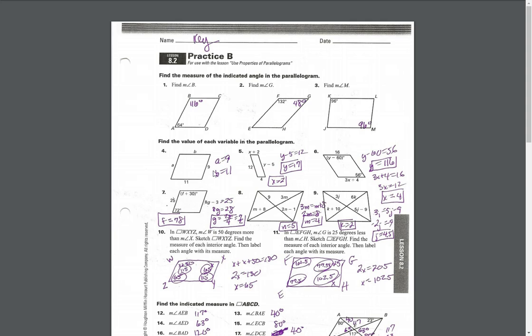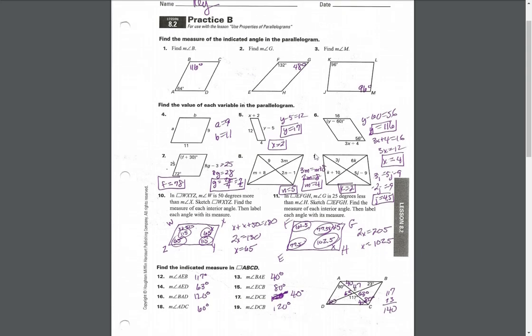For problems 4 through 9, you're using various properties. Opposite sides are congruent, so number 4 lets you find AB, and AR. Same thing with 5, so the opposite sides equal each other.